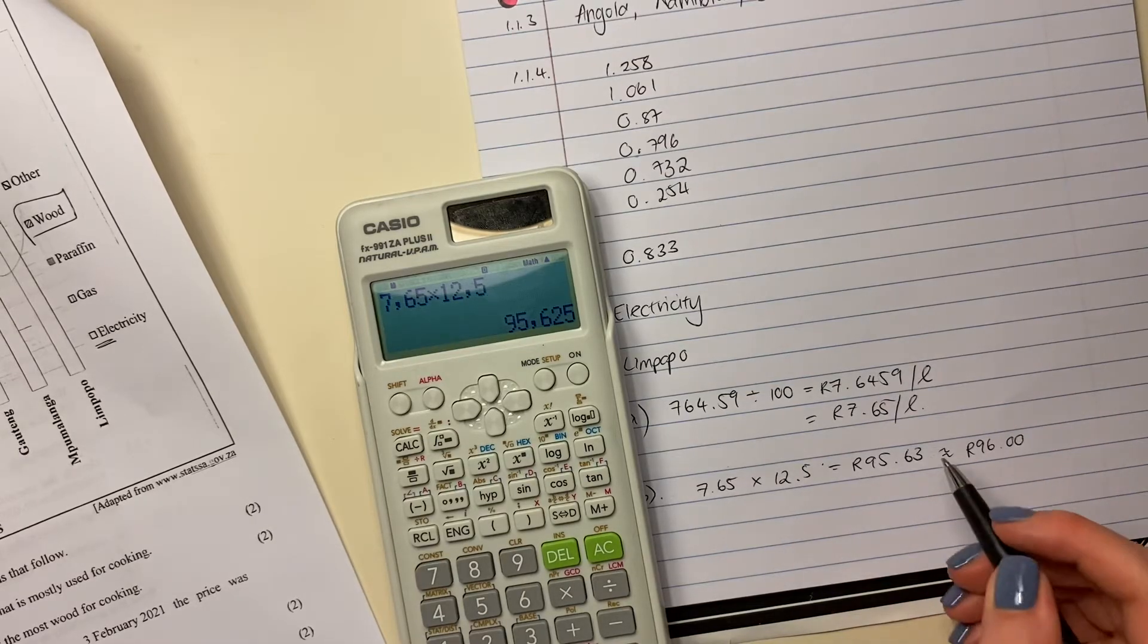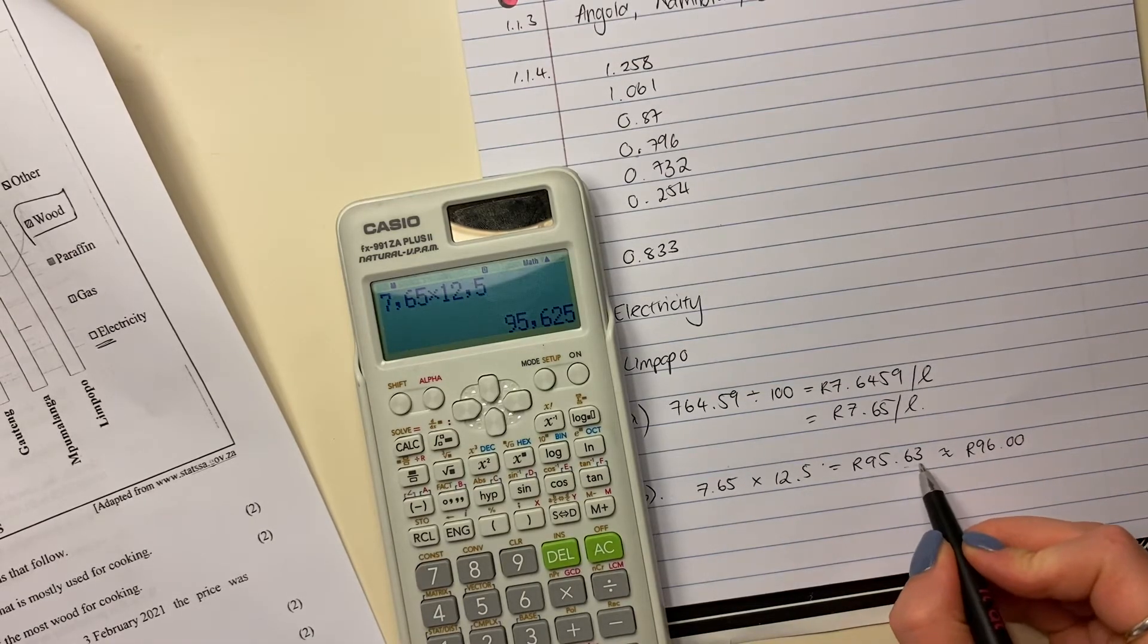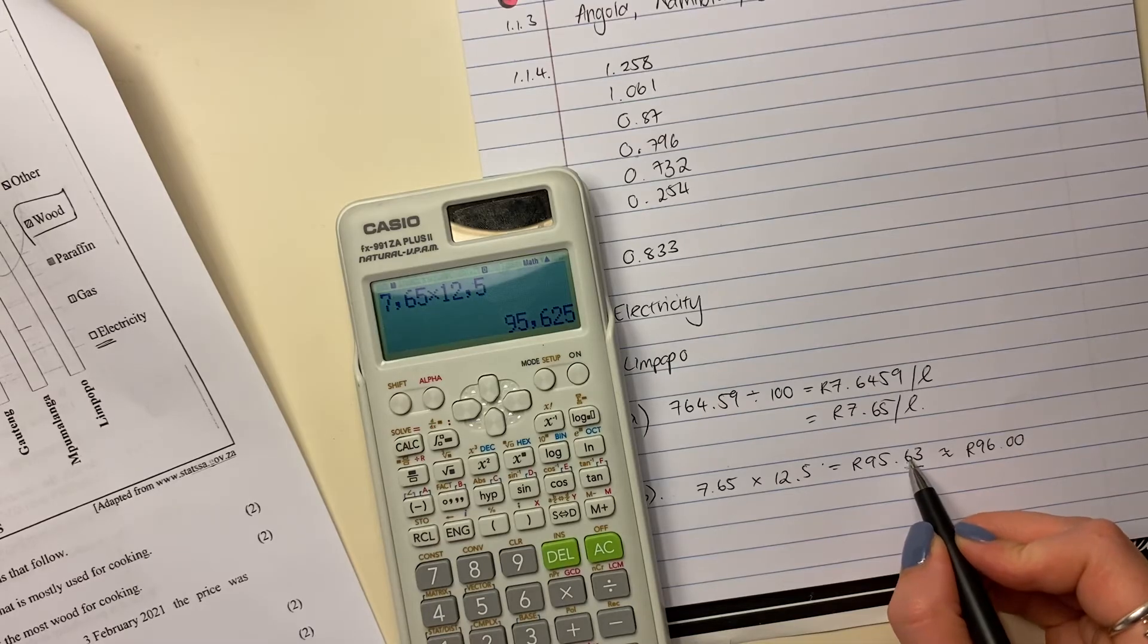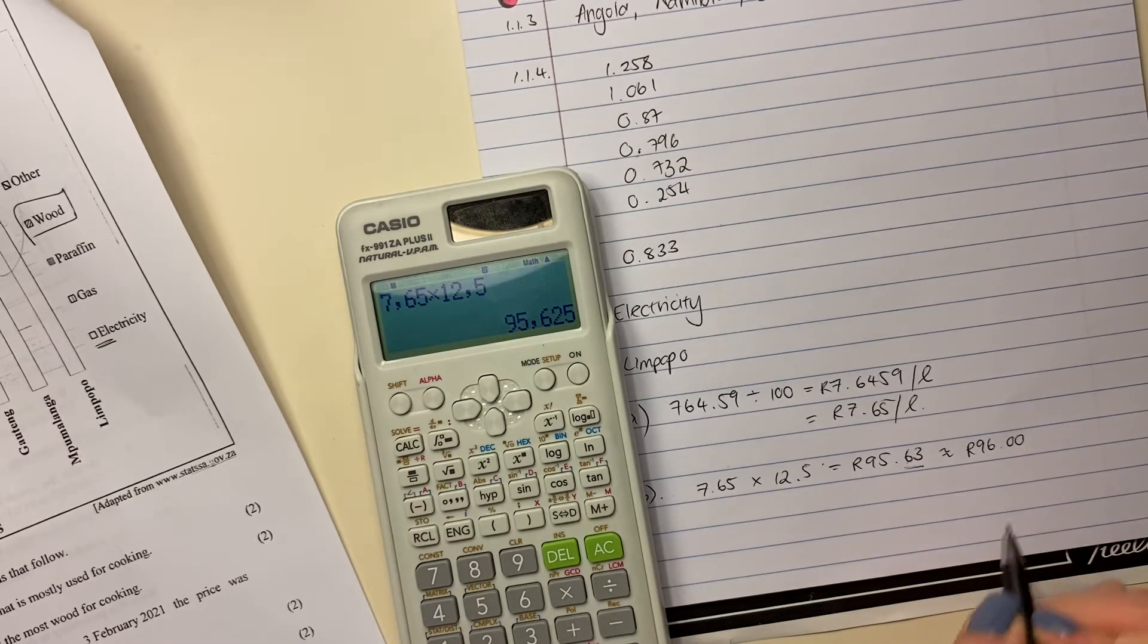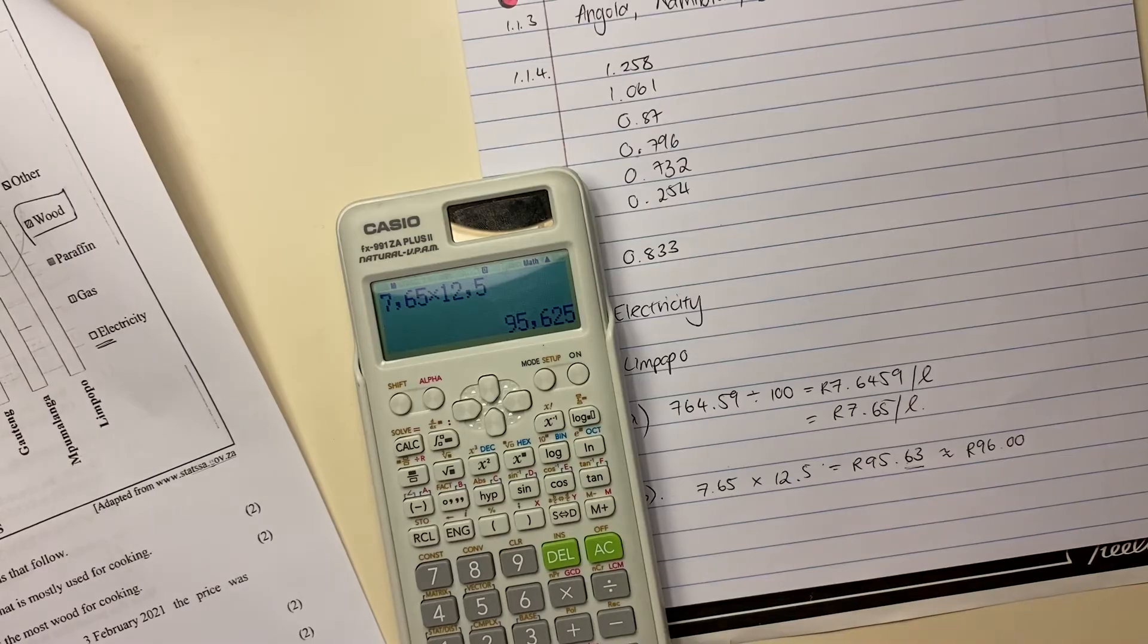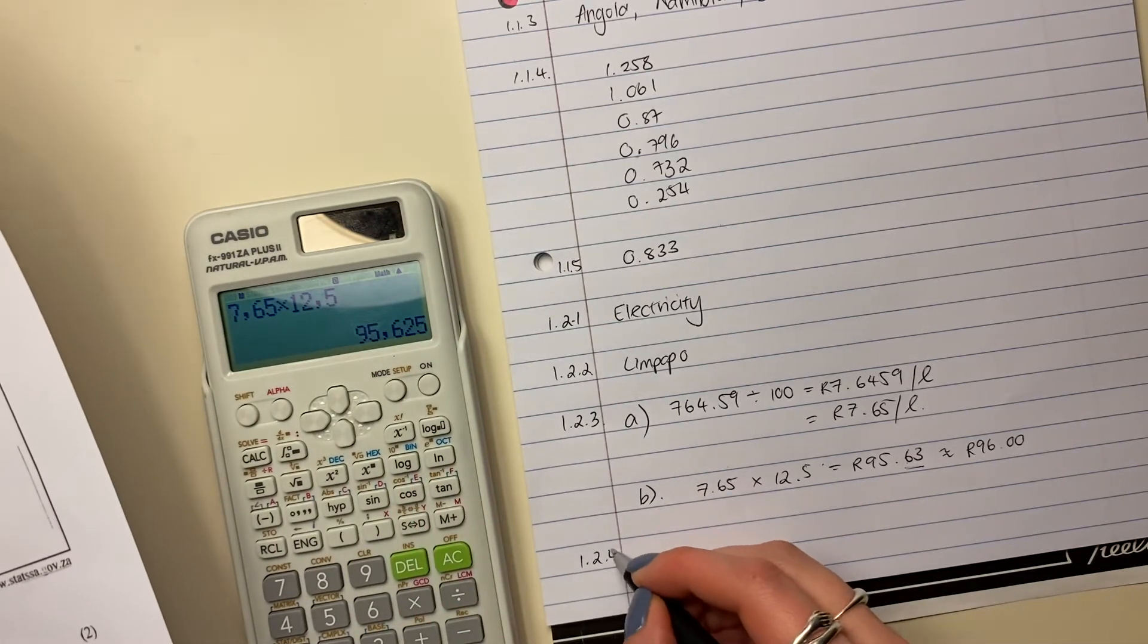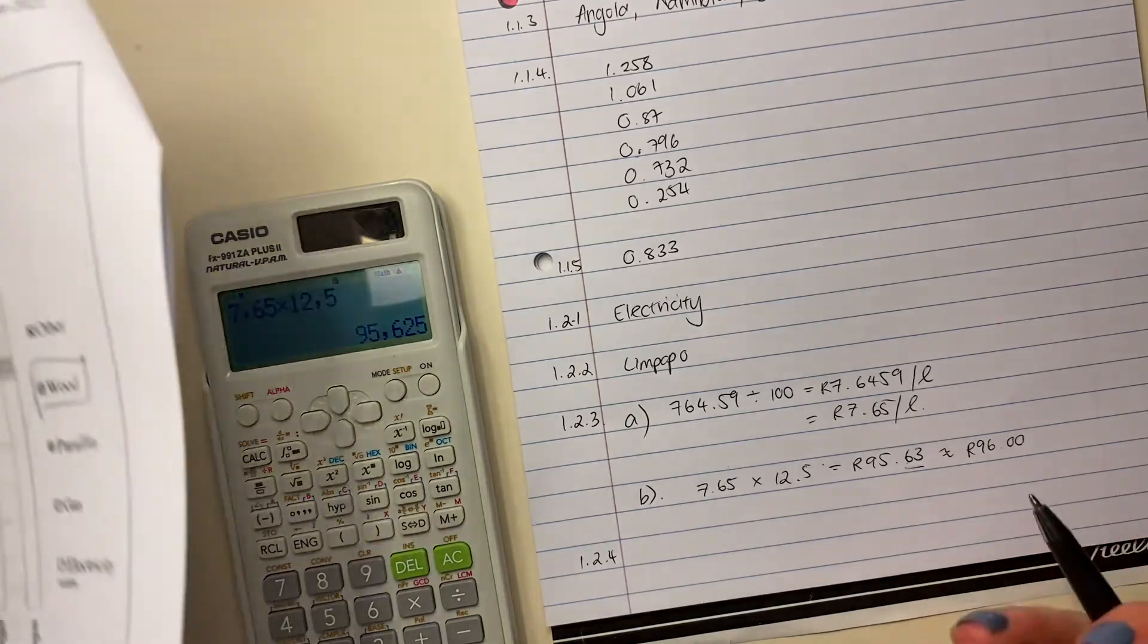Why? Because when we're rounding off, we want to basically round this off so that our decimals fall away. So we look at our first decimal. This is above 5, right? It's 5 and above that you round up. So this you're going to round up and it's going to be 96. So remember that when you're rounding off. Also be very careful to actually read your questions because students often forget this and they lose marks.